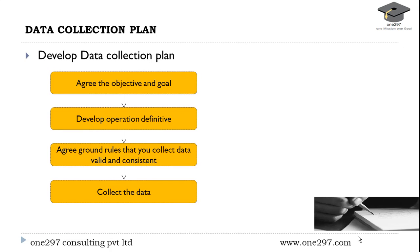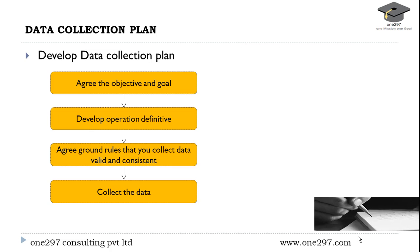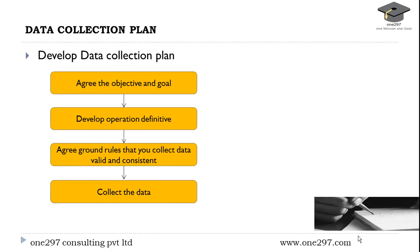Now we will learn how to develop a data collection plan. Data collection is a process that you need to manage and improve just like any other process. Your measurement and data will be only as good as the process that collected it. Data collection involves four steps: agree the objective and goal, develop operational definitions, agree ground rules that the data you collect is valid and consistent, and collect the data.